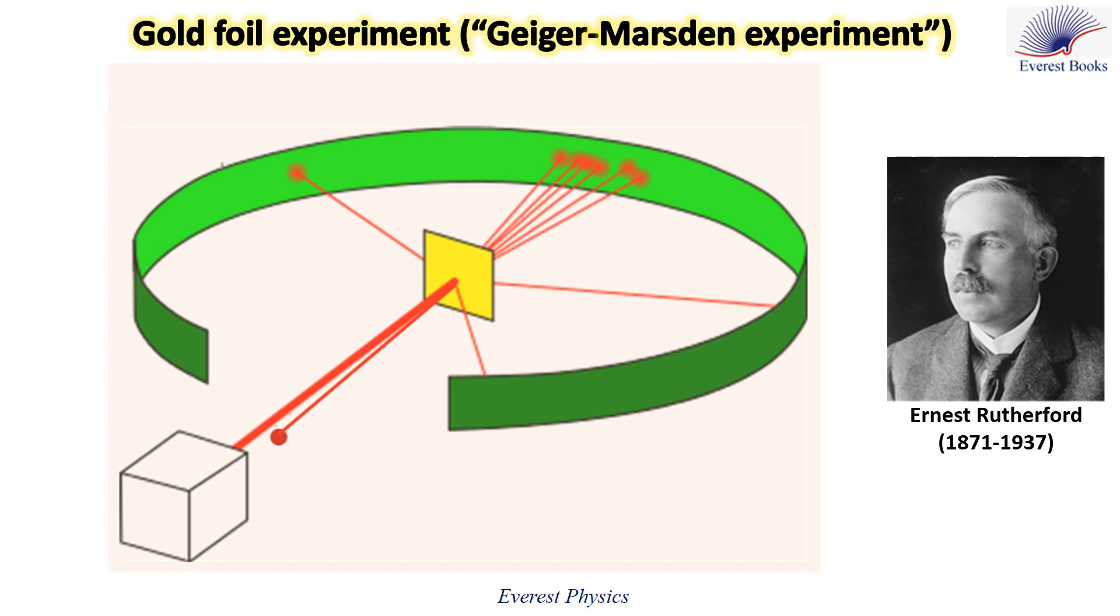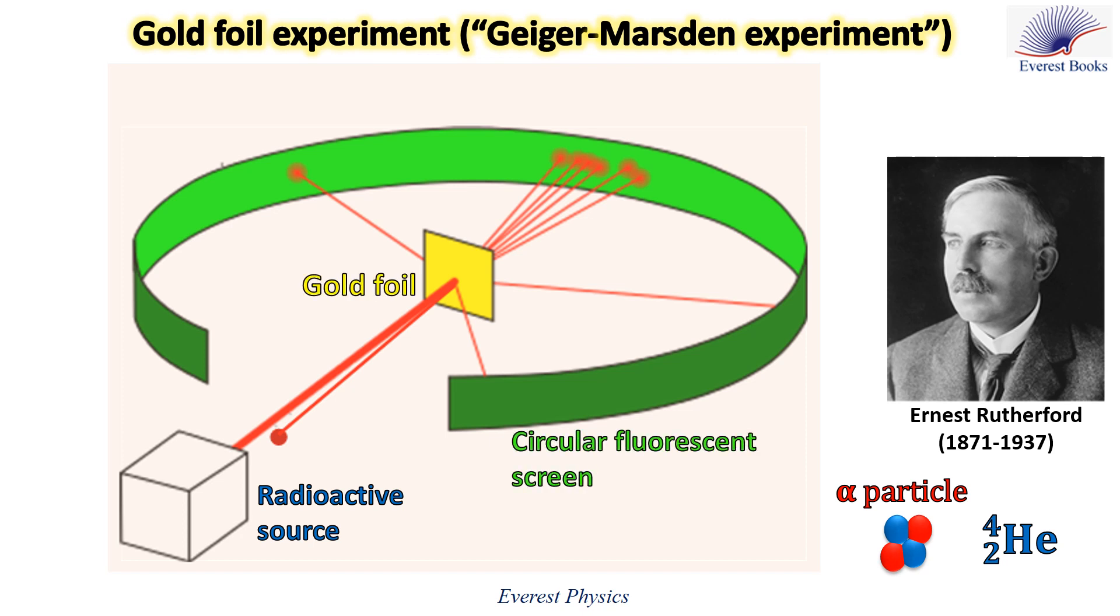In this experiment, a beam of alpha particles which are positively charged helium nuclei emitted from a radioactive source was projected into a thin gold foil. A fluorescent screen detects the scattered alpha particles.